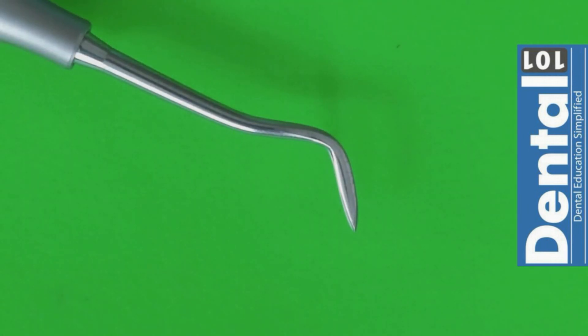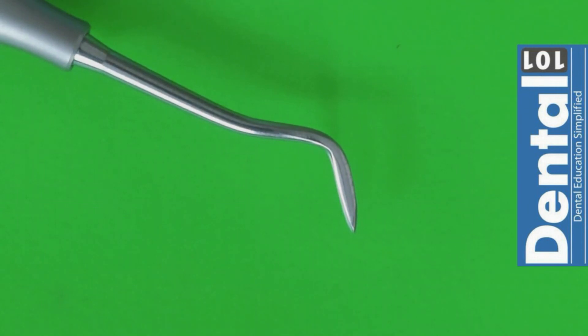Now we have the Hollenbach carver which is basically used to carve the occlusal anatomy of the amalgams, and sometimes you can even reach the interproximal spaces with this one while you are carving your amalgam as well.